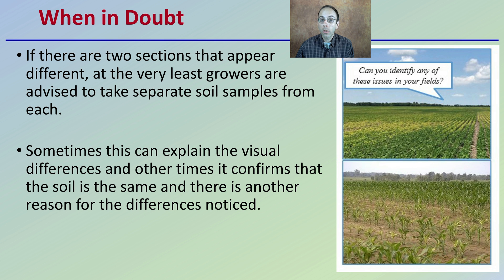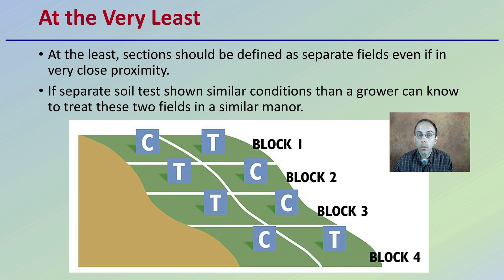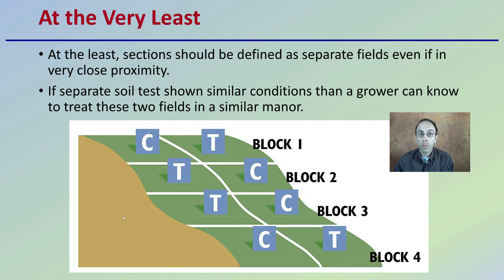It's good to know, especially when you're evaluating a new site. At the very least, growers' sections should be defined as separate fields, even if in very close proximity. If separate soil tests show similar conditions, then a grower can know to treat these two fields in a similar manner. Here, if we see these driving lanes and these different blocks, it would be advised, at least initially, to sample these differently. If these come back the same, we know to manage those very similarly. However, if we're seeing an elevation change, while they may look similar, there's potential for great differences. That $20 soil test can really save a lot of money in the long run.